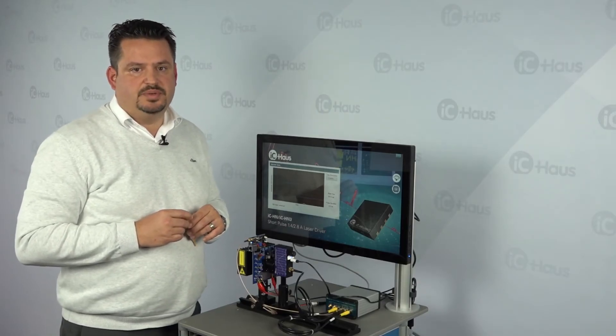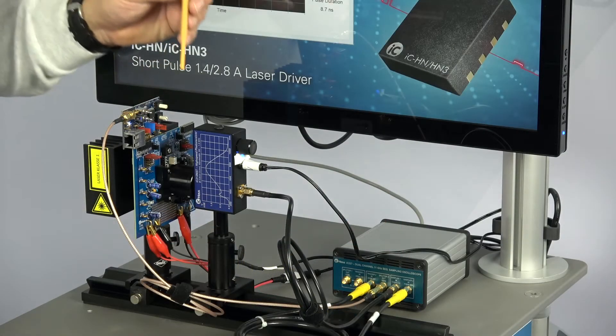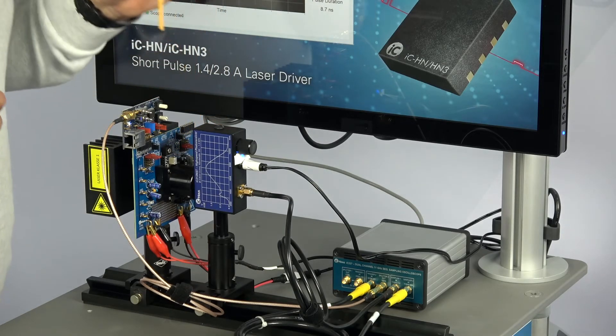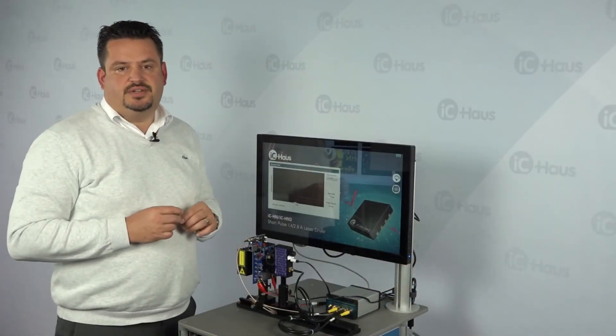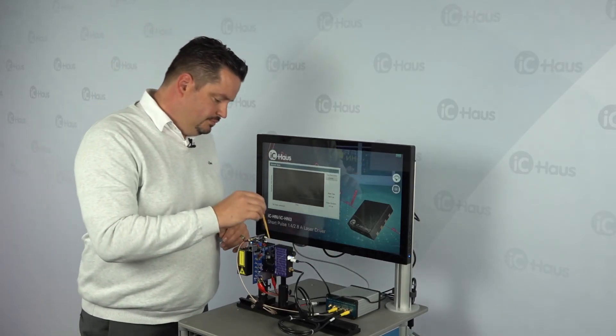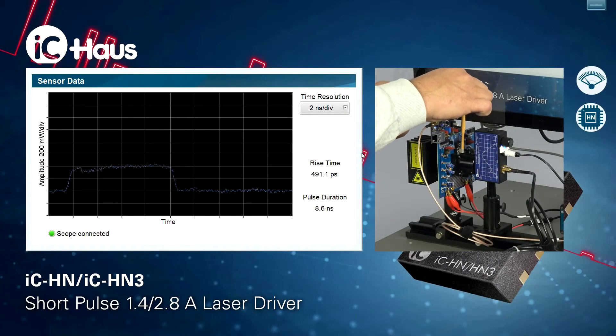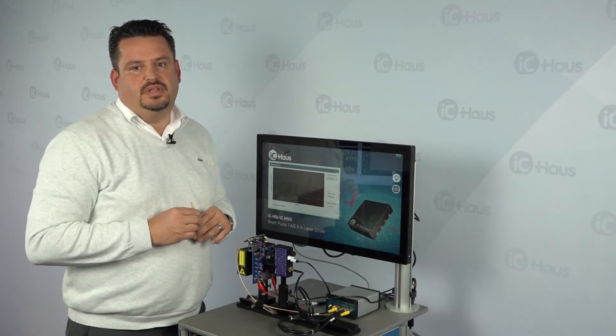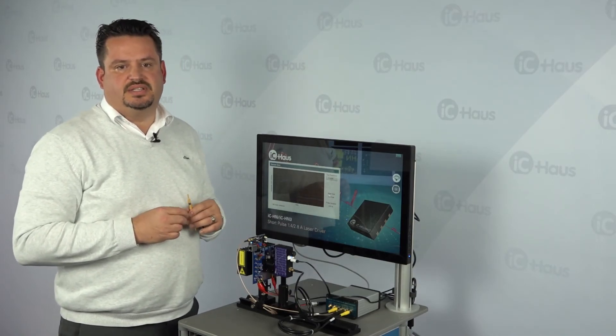This configuration is equipped with the mentioned HN1M evaluation board and corresponding laser source. If you change the resistance on the HN1M board by turning the potentiometer, you can see that the pulse height changes but the pulse width remains constant. If you change the pulse width at the LVDS input with our nanosecond pulse generator, the pulse height remains stable.